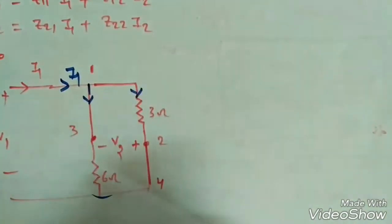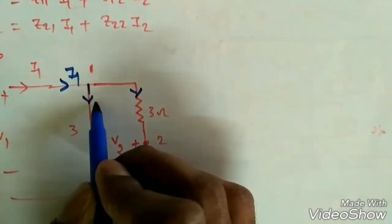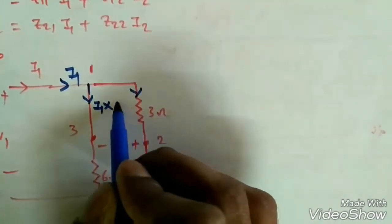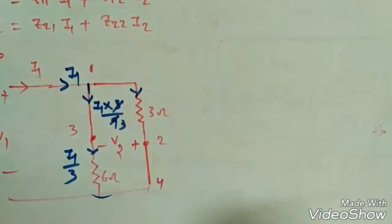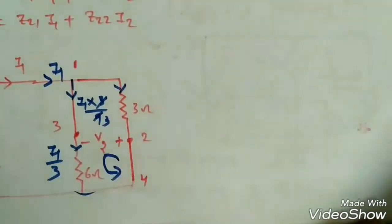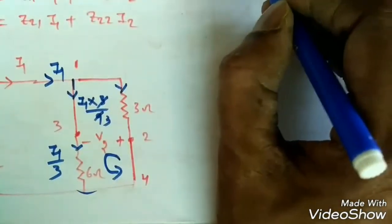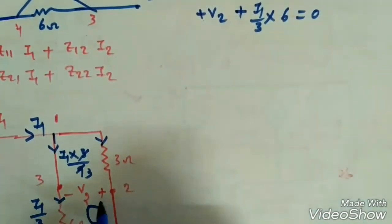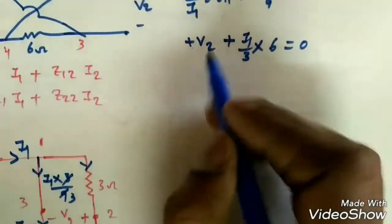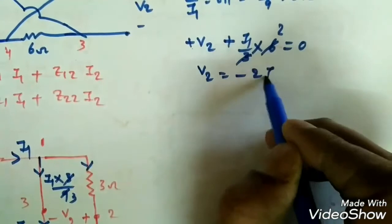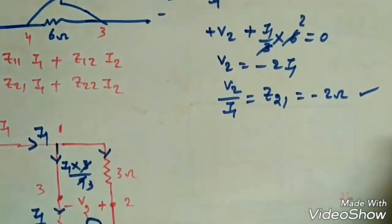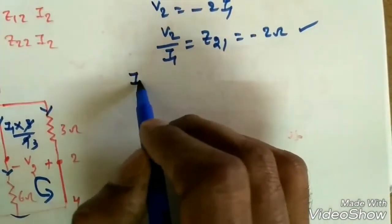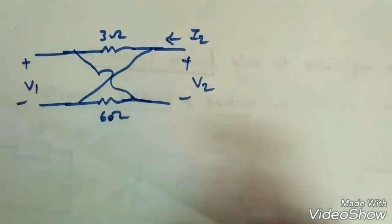To find Z21 = V2/I1 with I2 = 0: by current divider, the current through the 6 Ω branch = I1 × 3/(3+6) = I1/3. Applying KVL: +V2 + (I1/3) × 6 = 0, so V2 = −2I1, giving Z21 = −2 Ω.